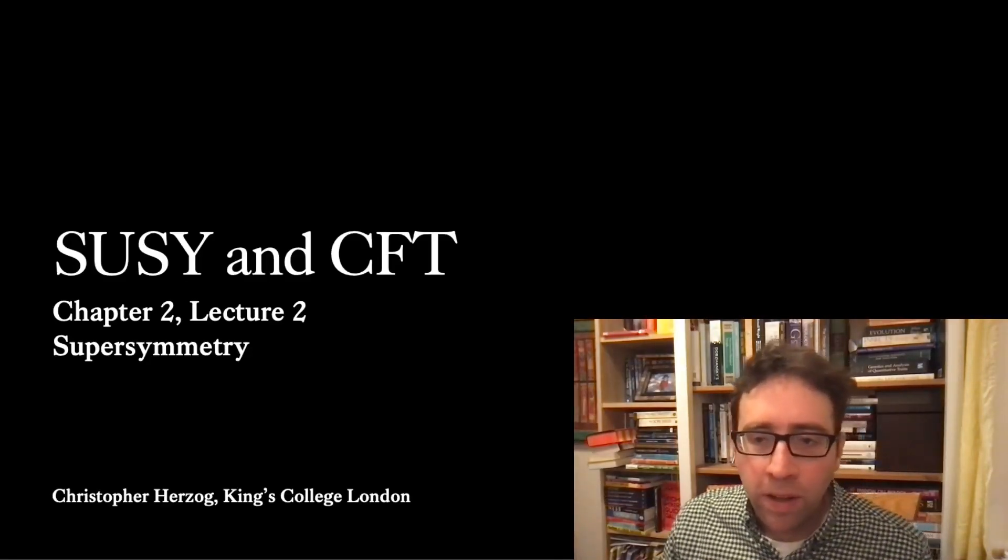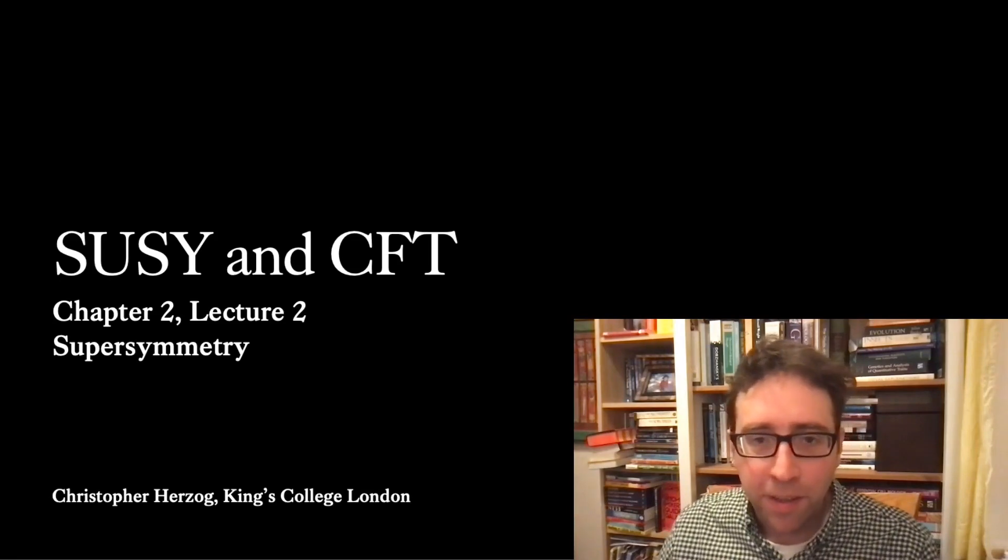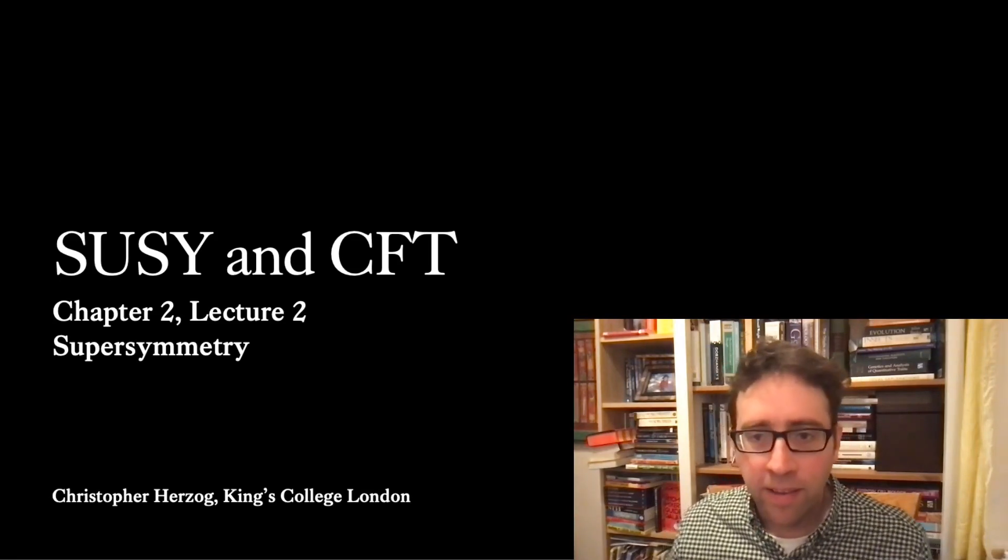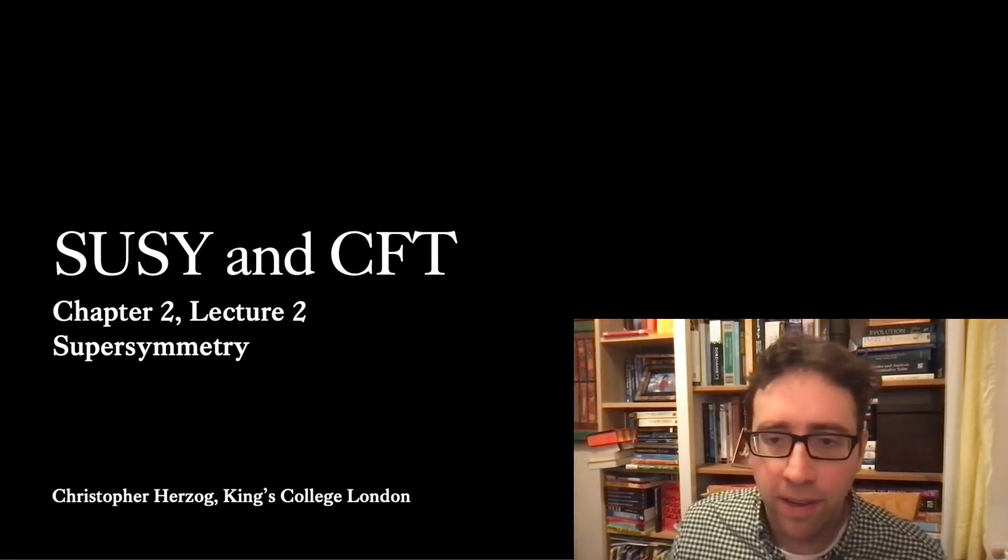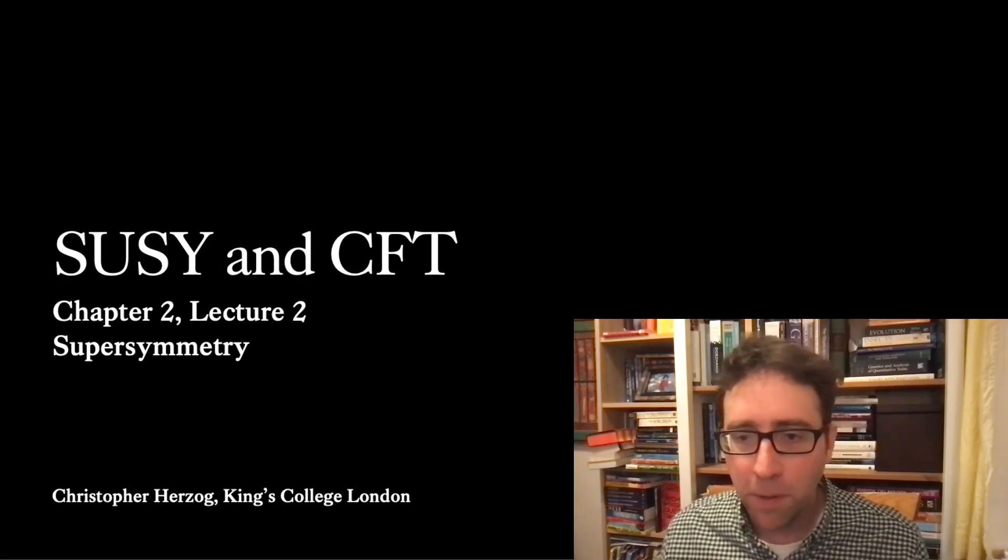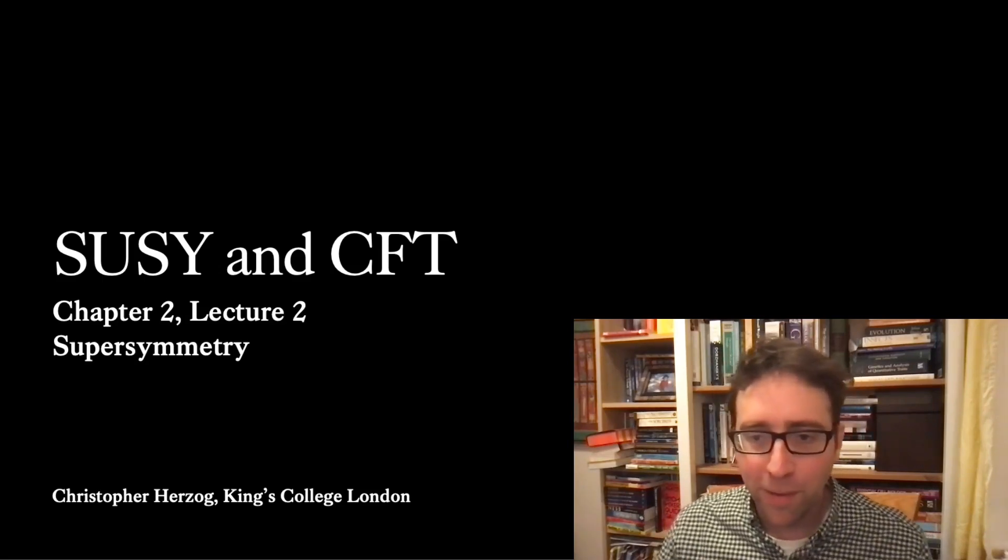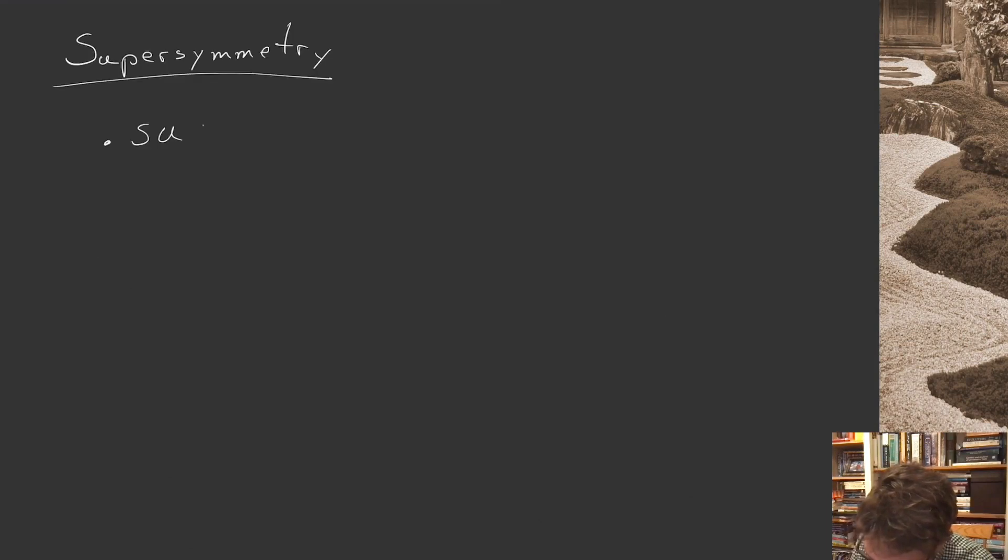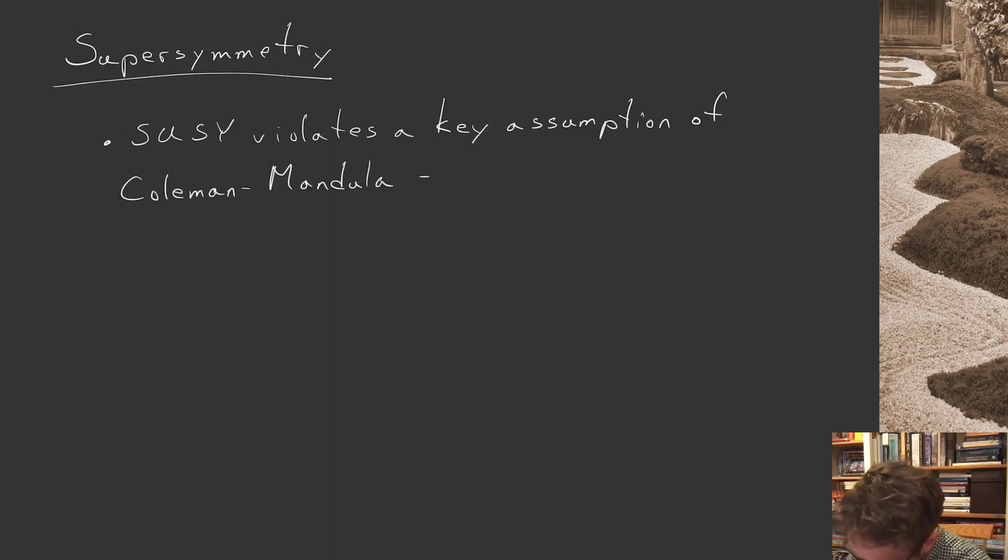All right. Welcome to the second mini-lecture of the week. We're going to discuss today how supersymmetry is a loophole to the Coleman-Mandula theorem. So let's just get started. Supersymmetry. The claim is that supersymmetry violates a key assumption of Coleman-Mandula. And that assumption is that the symmetry comes from a Lie algebra.